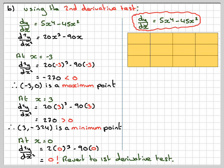So we have dy/dx equals 5x^4 minus 45x^2, and we'll make a table. We have x: x less than 0, x equal to 0, x greater than 0. Down here, we write dy/dx and the curve. At x equals 0, we know that dy/dx equals 0, otherwise we wouldn't have got this point. Therefore, the curve is horizontal.